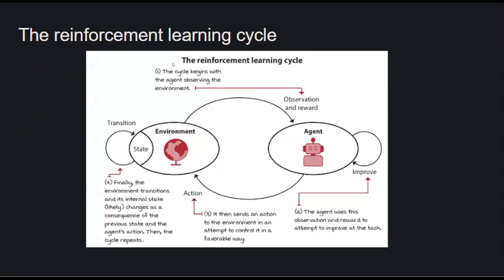The reinforcement learning cycle works as follows: the agent observes the environment, receives some reward, and uses that reward to attempt to improve at the task. It then sends an action to the environment in an attempt to arrive at a more favorable outcome. The environment then transitions to some new state as a result of the current state and the action taken, and this cycle continues.